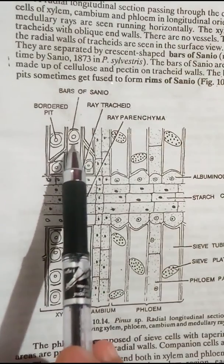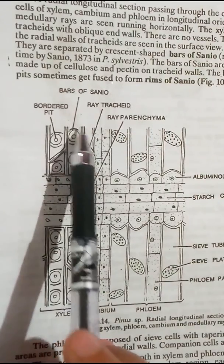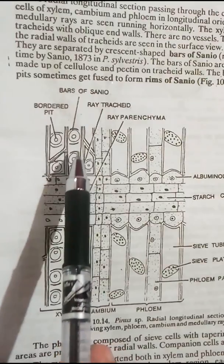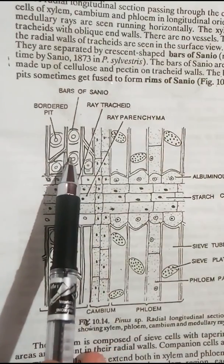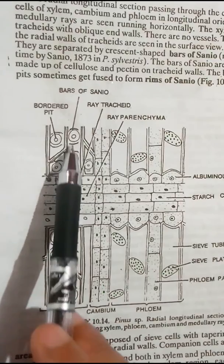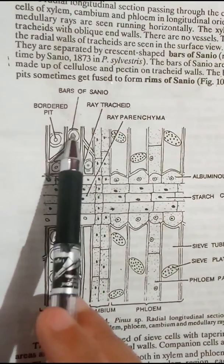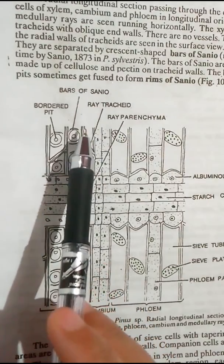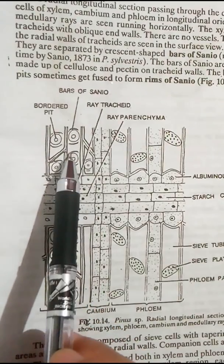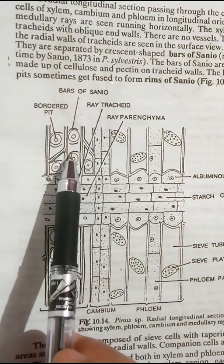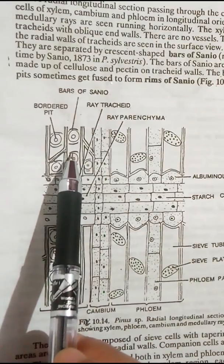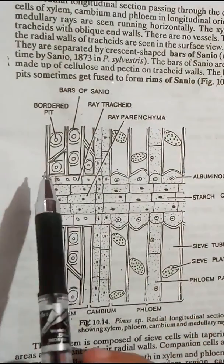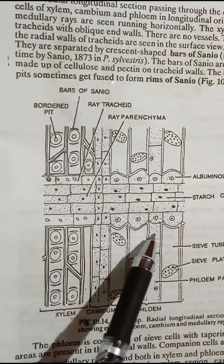The tracheids are separated by what we refer to as the bars of Sanio. These bars of Sanio are special thickenings made up of cellulose and pectin on the tracheid walls. You can see here the crescent-shaped bars of Sanio adjacent to the bordered pits. Sometimes two adjacent bars of Sanio get fused together to form what we refer to as rims of Sanio.